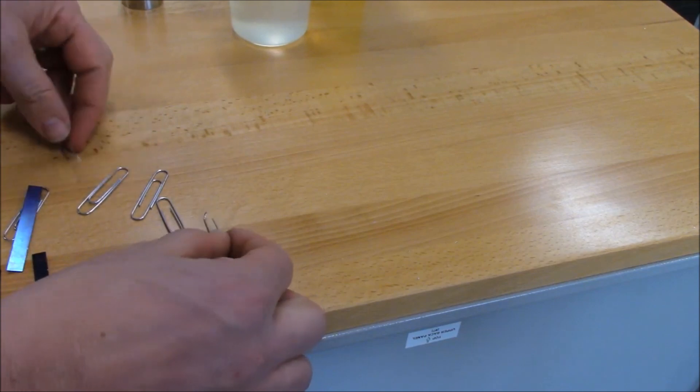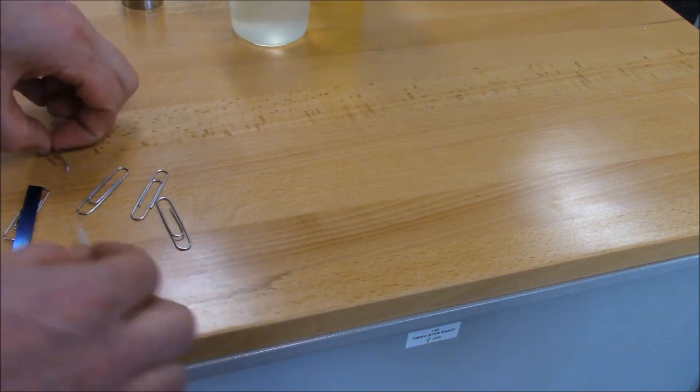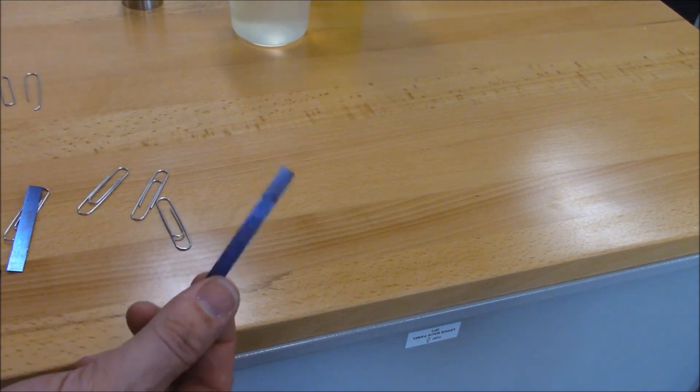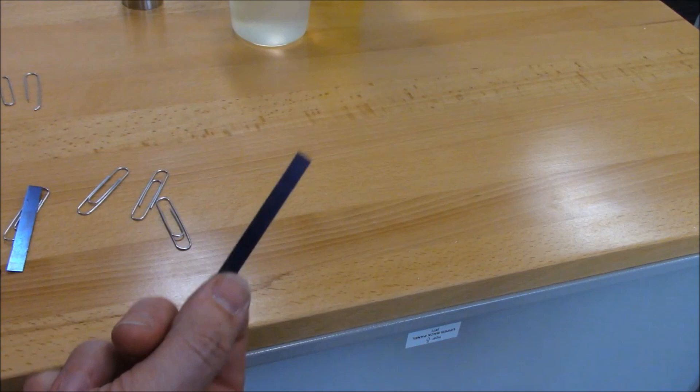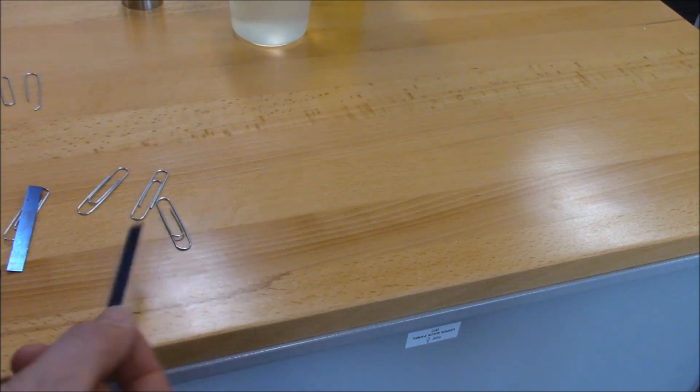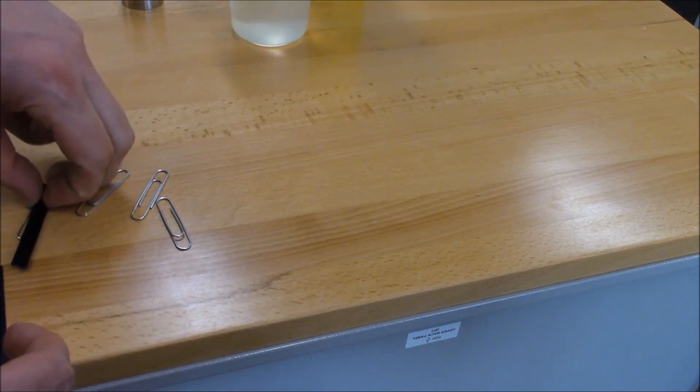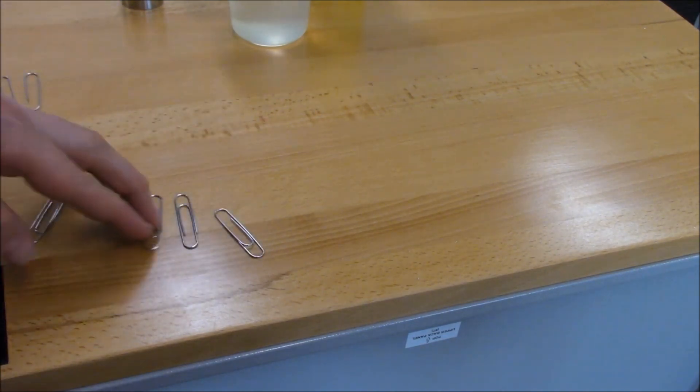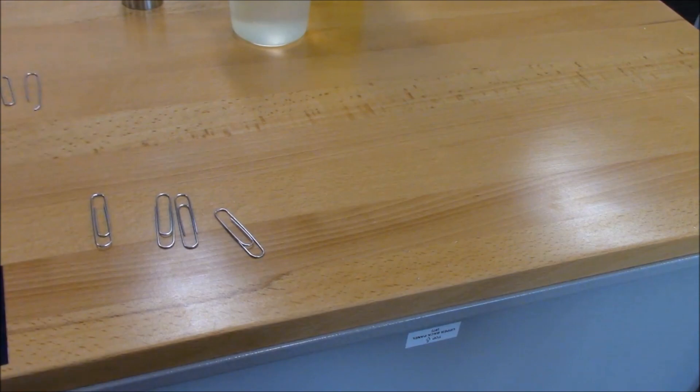We're going to do some heat treating with a blowtorch. I also have some real steel here, and maybe we'll do the same thing with this too, because this is going to be much better results than just silly paperclips. But the paperclips will definitely change as we heat and cool them at different rates. So let's get started.